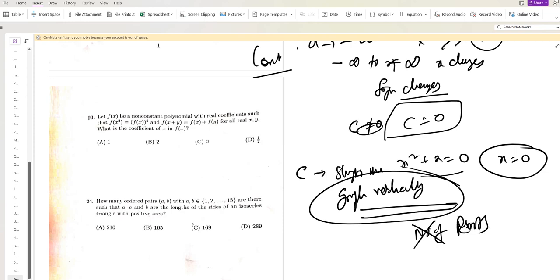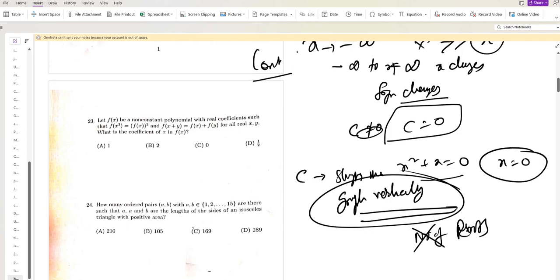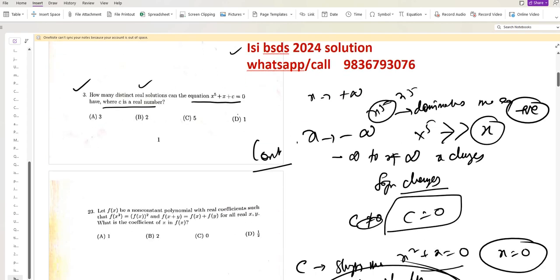Okay, so regardless of the value of c, the equation has at least one real root. Hence, we can say that this is 1 as the answer. So d is the answer.